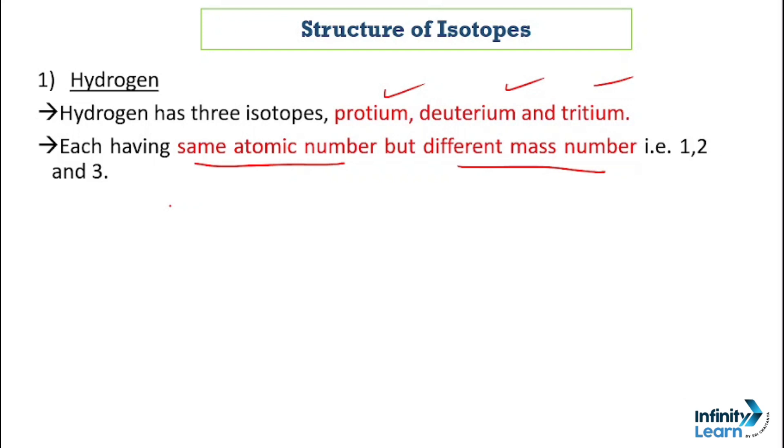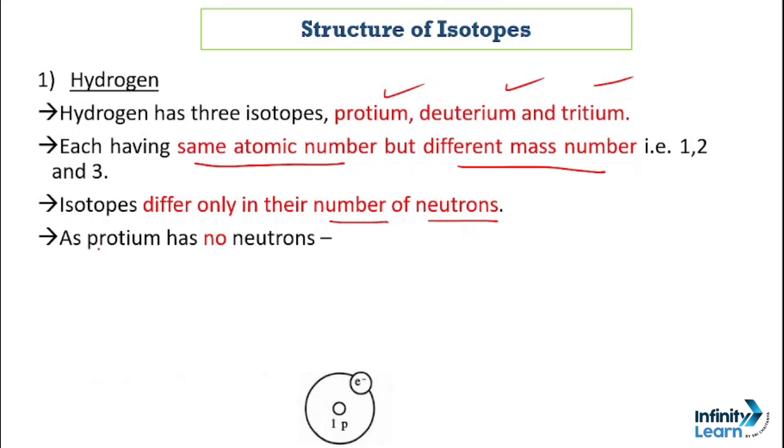Isotopes differ only in their number of neutrons. As you can see, protium has no neutrons. We can represent this way: the mass number is 1, hydrogen, and the atomic number is 1.